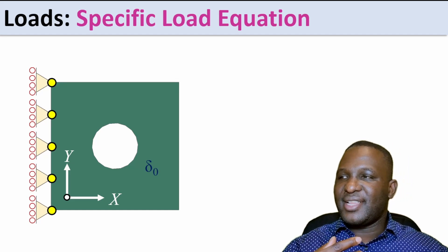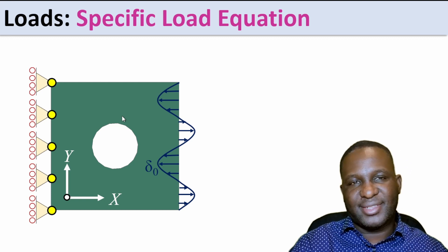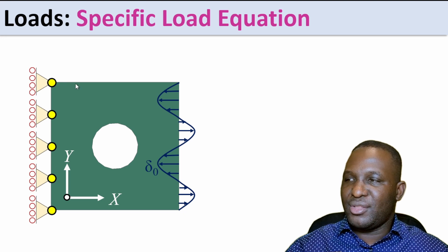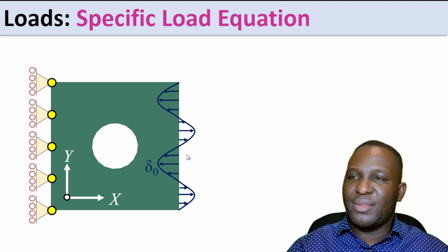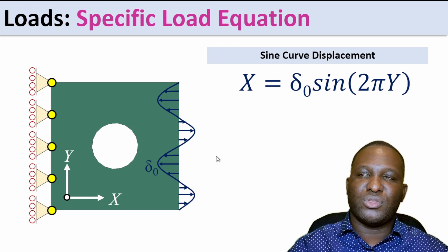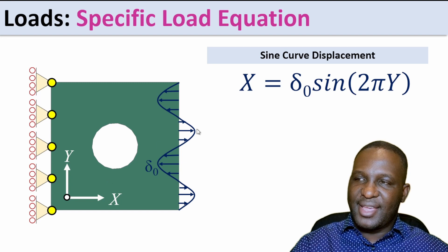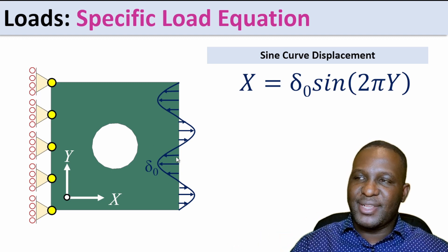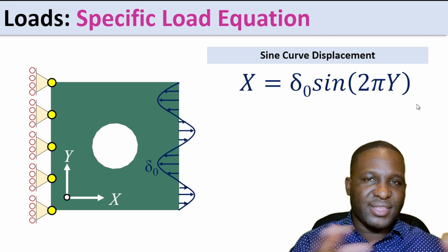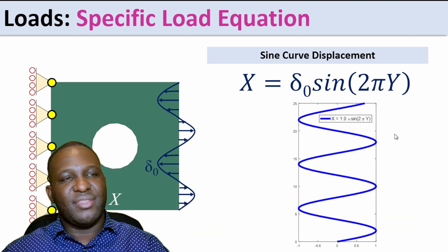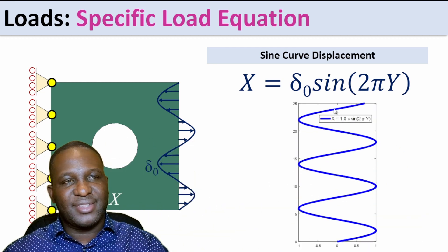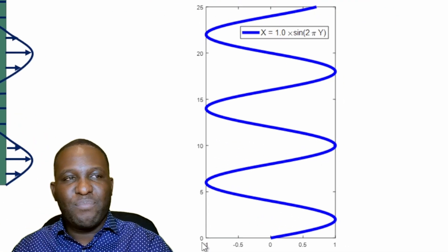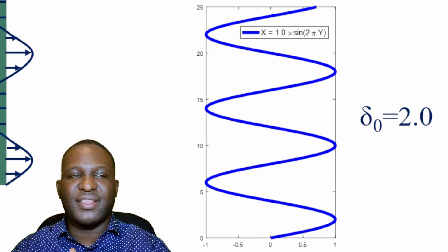For the first case, we have a sinusoidally varying pressure load. The system has a roller support and a fixed support at the back with a hole in the middle. The x-displacement is expressed as delta_0 times sine(2π·y). The function varies from 0 to 1, but we're going to set delta to 2 to produce a significant deformation within the model. Let's go into Abaqus and show how you can do this.